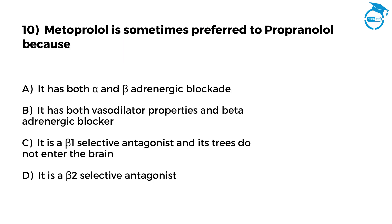Here is the last one — give it a try. Metoprolol is sometimes preferred to propranolol because. Option A, it has both alpha and beta adrenergic blockade. Option B, it has both vasodilator properties and beta adrenergic blocker. Option C, it is a beta-1 selective antagonist and it does not enter the brain. Option D, it is a beta-2 selective antagonist. Your time starts now — only 7 seconds left, post your answer in the comments.